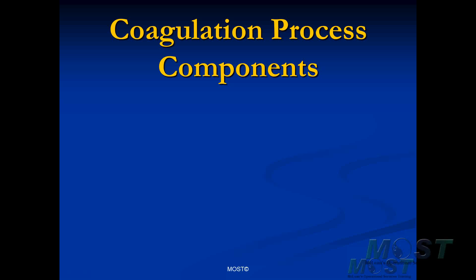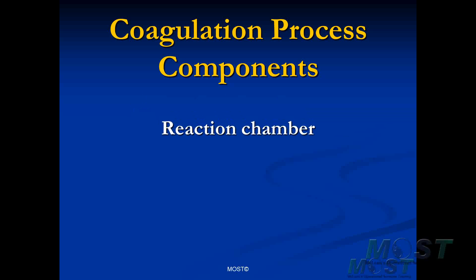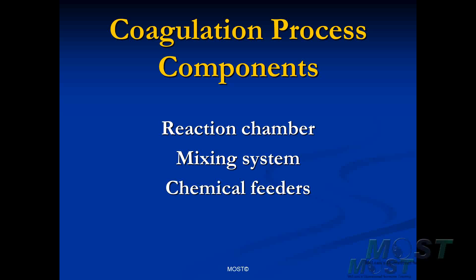To accomplish coagulation, we need a system with at least three components. These key components are a reaction chamber, a place where the coagulation process can actually be performed. Secondly, we need a mixing system so that the incoming raw water can be thoroughly mixed with our primary coagulant. And finally, we need a chemical feeder that is capable of accurately dispensing precisely the amount of chemical that we need to accomplish coagulation.